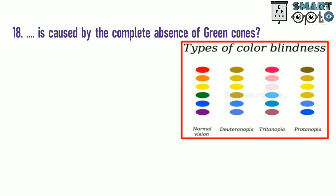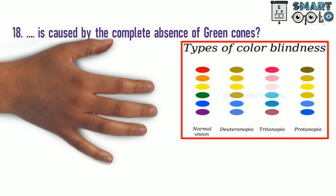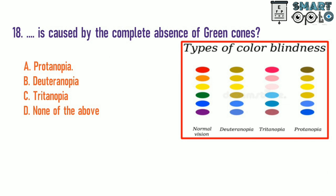Question 18. What condition is caused by the complete absence of green cones? A. Protanopia. B. Deuteranopia. C. Tritanopia. D. None of the above.